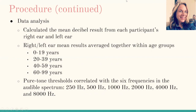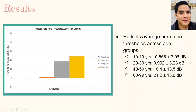Here is a graph that presents average pure tone thresholds across four age groups: 10 to 19, 20 to 39, 40 to 59, and 60 to 99 years old. Every bar in this graph represents plus or minus one standard deviation from the mean, with pure tone thresholds on the y-axis and age on the x-axis. The 10 to 19 year group had an average pure tone threshold of -0.56 dB ± 3.96. The 20 to 39 group had 0.10 dB ± 8.23. The 40 to 59 group had 18.4 dB ± 18.5. The 60 to 99 group had 24.2 dB ± 16.6.